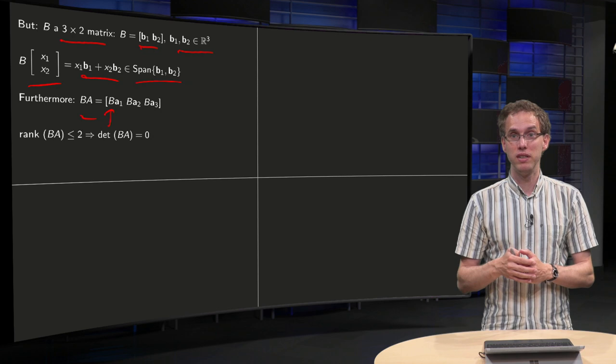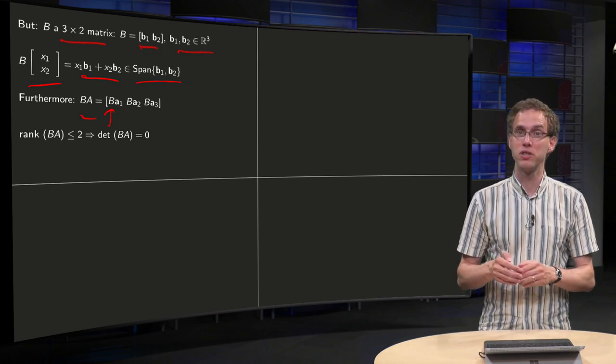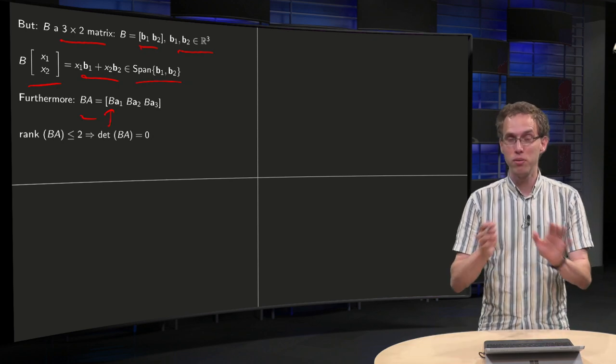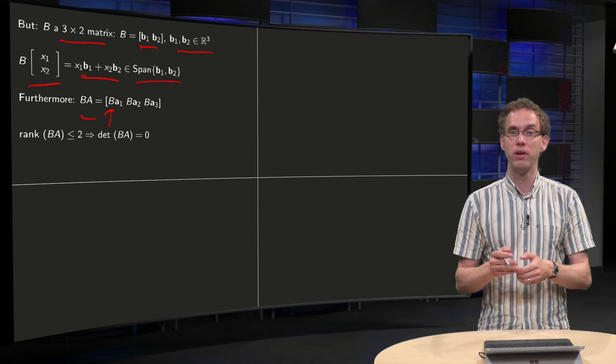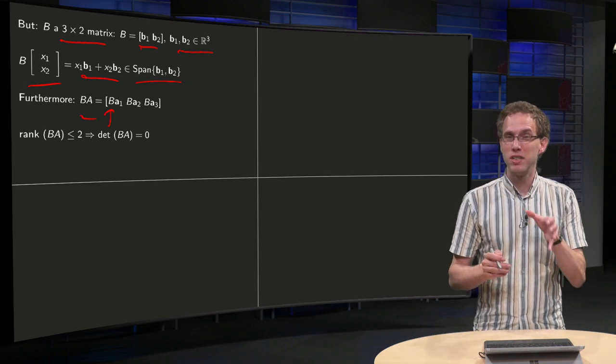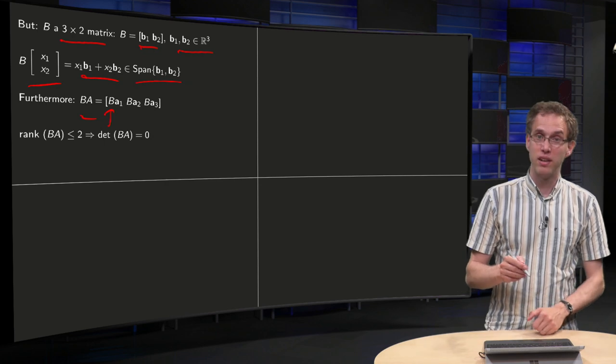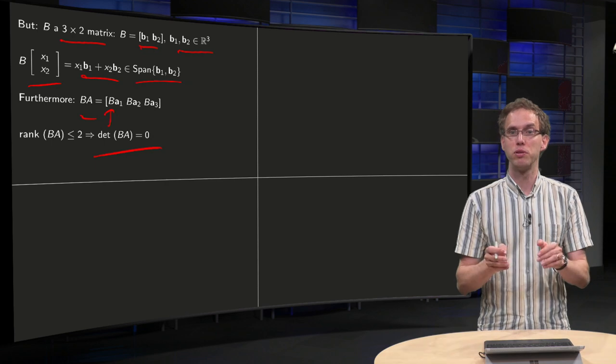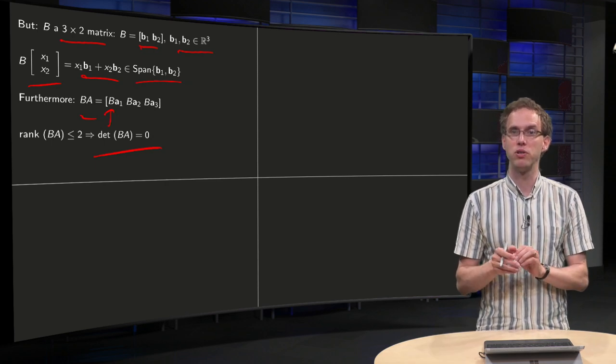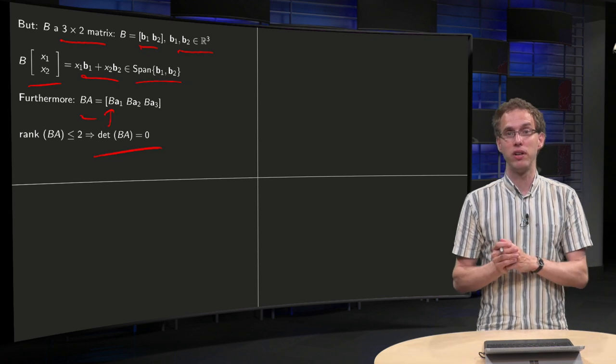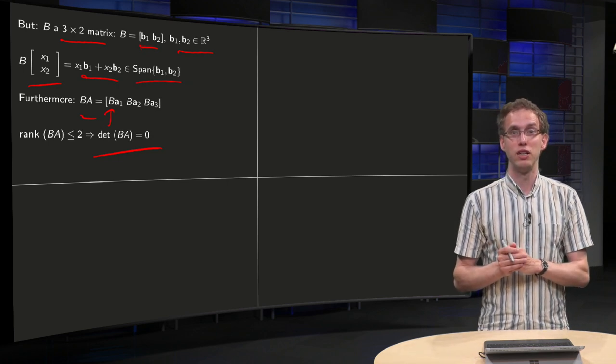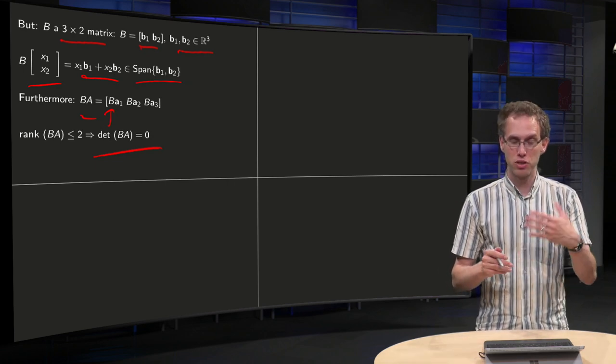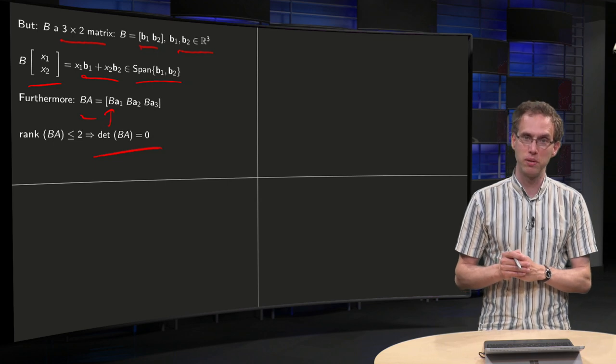So your matrix B times A will always have dependent columns. In particular, that means that the rank of B times A cannot be equal to three, it has to be lower, either two or one, or even zero. So that means in particular that the determinant of the matrix is always zero, because your B times A cannot be invertible, you can have at max two pivots or whatever. So you know that the determinant of B times A is always zero, regardless of what matrices B and A you take, as soon as those sizes 3 by 2 and 2 by 3 are given.